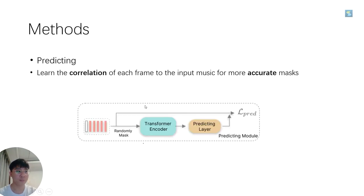Before generating masks, we should learn the correlation of each frame to the input music for more accurate masks. We use a random masking strategy in the input before feeding it to the transformer encoder.